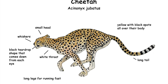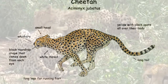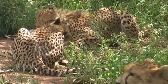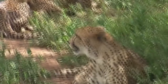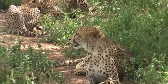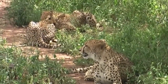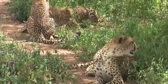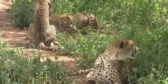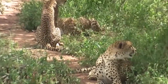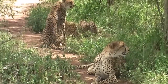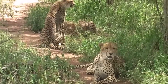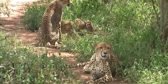Cheetahs are nearly extinct in Asia, with the largest verified group — a few dozen — living in northeastern Iran. Cheetahs eat game birds, rabbits, small antelopes such as springbok, impala, and gazelle, young warthogs, and larger antelopes such as kudu, hartebeest, oryx, and roan.